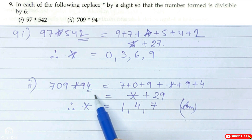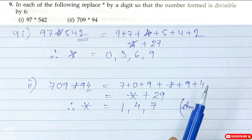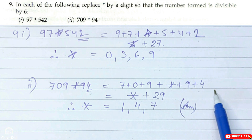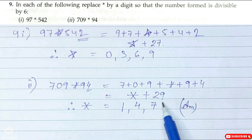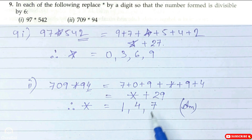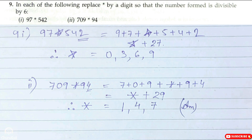Second part: the number is 709*94. The last digit 4 is even, so divisible by 2. For divisibility by 3, sum the digits: 7 plus 0 plus 9 plus star plus 9 plus 4, giving star plus 29. Adding 1: 1 plus 29 is 30, divisible by 3, so star can be 1. Then 4 plus 29 is 33 — divisible by 3. Then 7 plus 29 is 36 — divisible by 3. We stop here as the next would be double-digit. So the final answer for star is 1, 4, and 7.